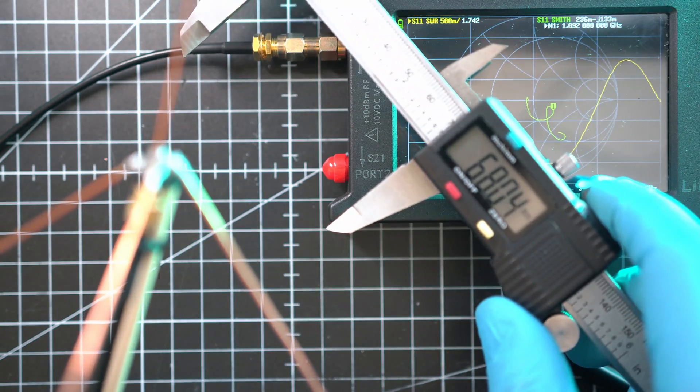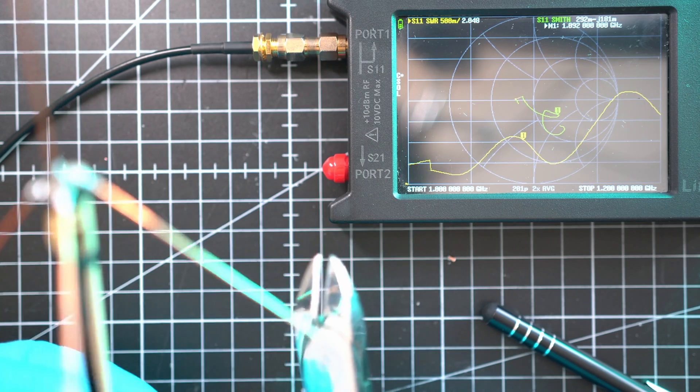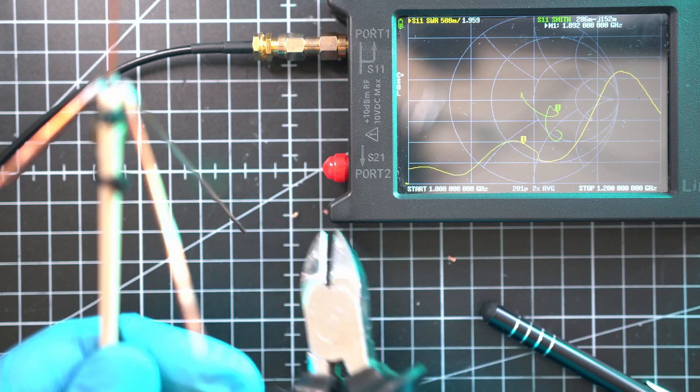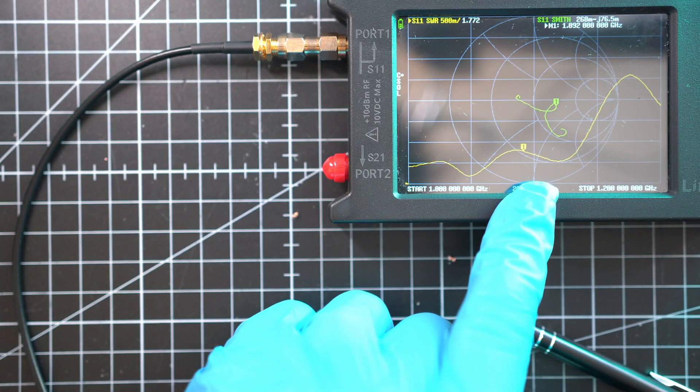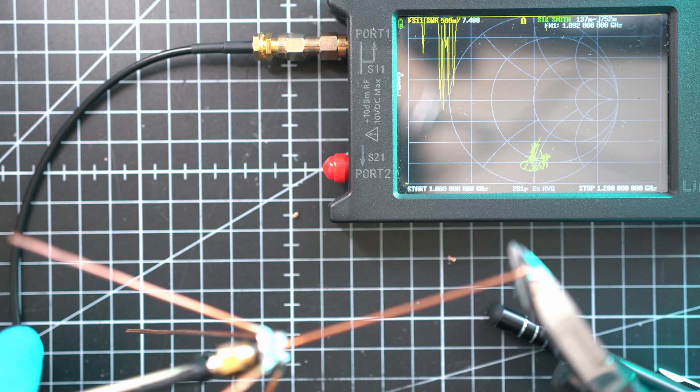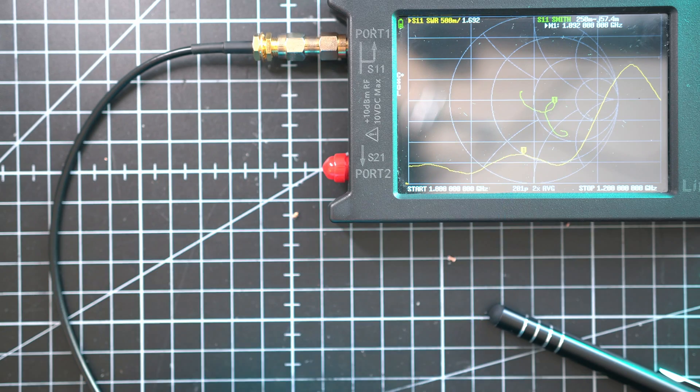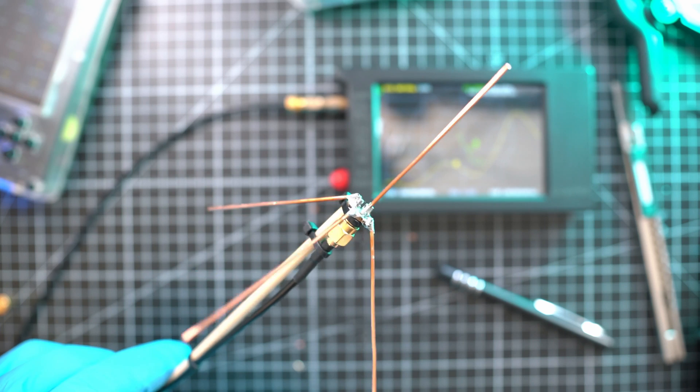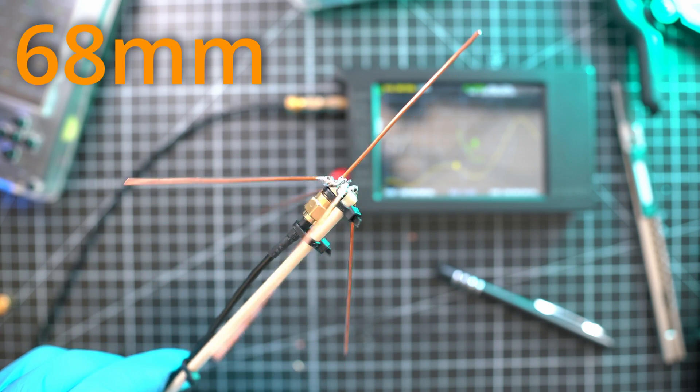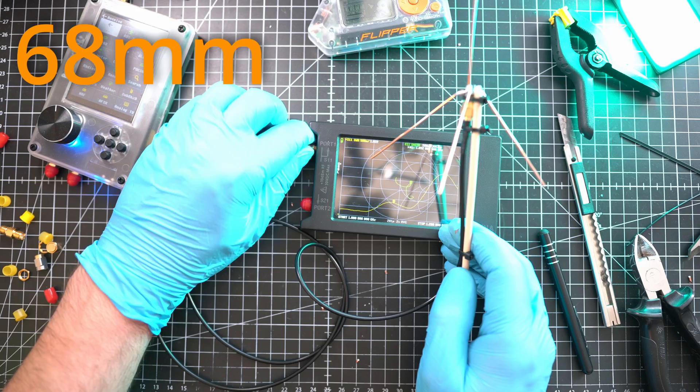Now let's cut the legs of the spider to around 68 millimeters and see how it affects the performance. We are on 1.8 SWR. We can shorten the core a bit more to see if it does something. And we went down to 1.7-ish SWR. So indeed, 68 millimeters is the right size for an ADS-B antenna.